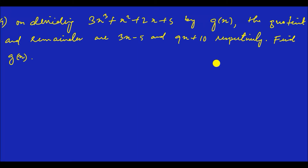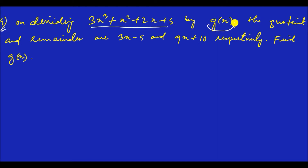Hello everyone, welcome to this video of Emboss class 10 mathematics, Exercise 2.3, question number 4. If you are interested in SEBA, NCERT, and Emboss, you can use it as well. On dividing this polynomial by another polynomial GX, the quotient and remainder are given respectively. Then find the value of GX.